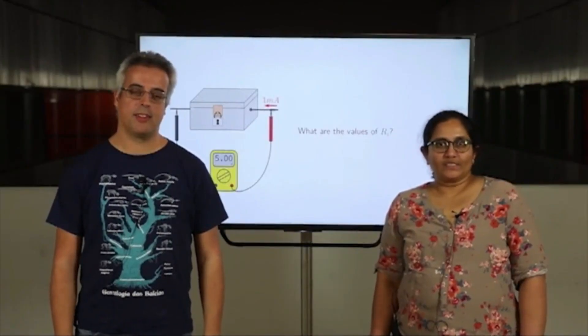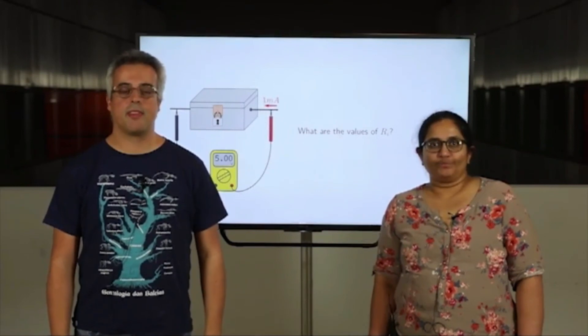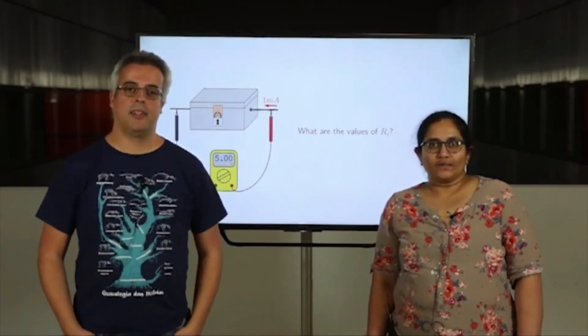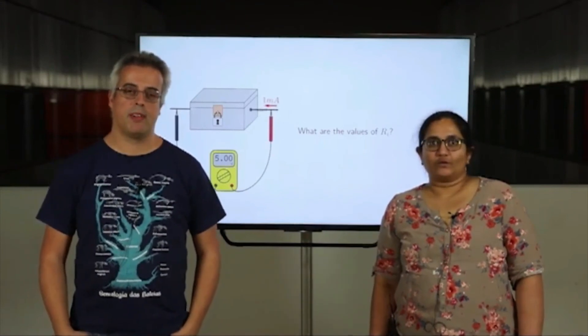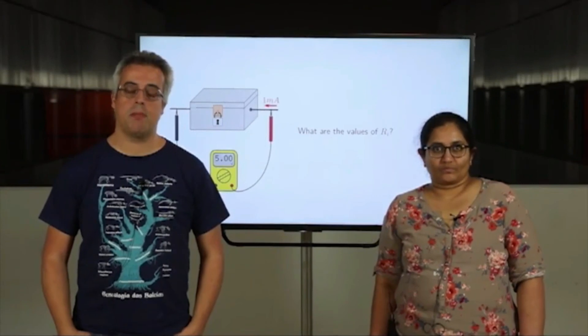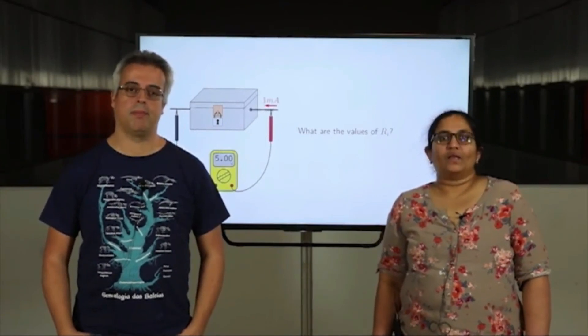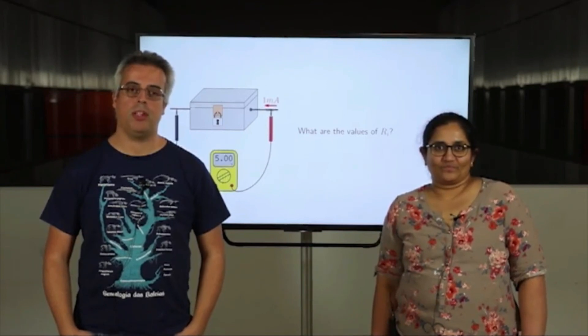This last example is very similar to the type of problem that EIT is trying to solve. We want to know the internal resistances inside a box based on measurements taken on its boundary. In other words, we want to see what's inside the box but without opening it. Thank you for watching. The journey of EIT will continue in the next video.